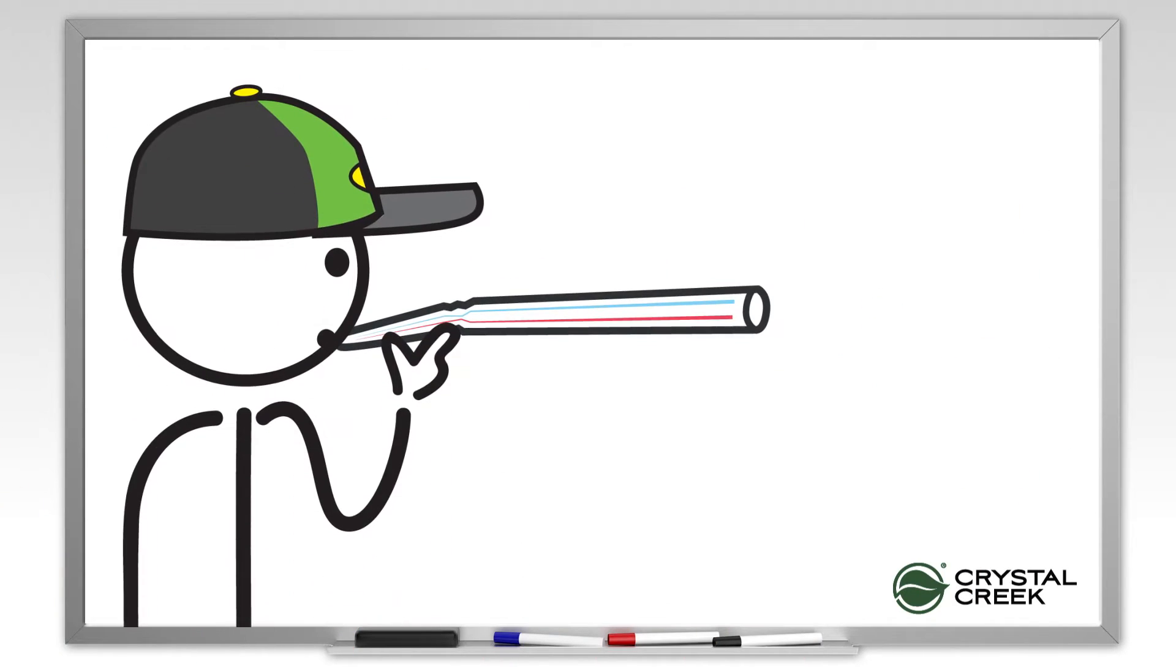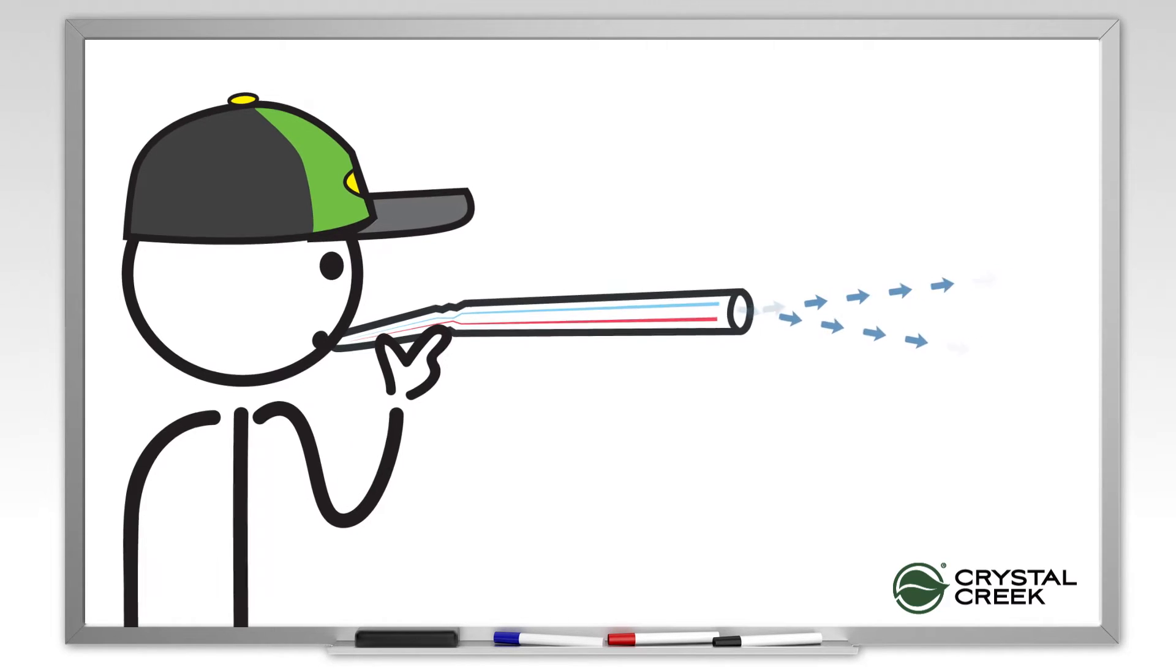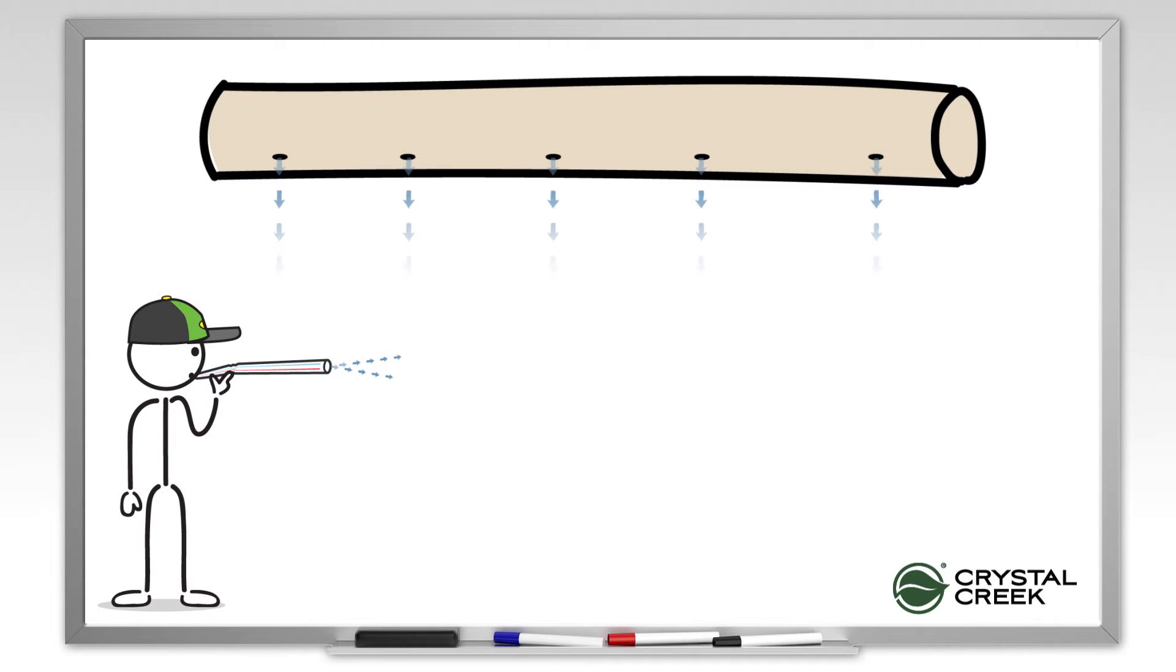Small holes produce weak, thready jets of air that quickly lose momentum, much like air blown through a small diameter straw. This results in gentle, slow air reaching the calves. Making small holes in a ventilation duct is ideal for cold weather use.